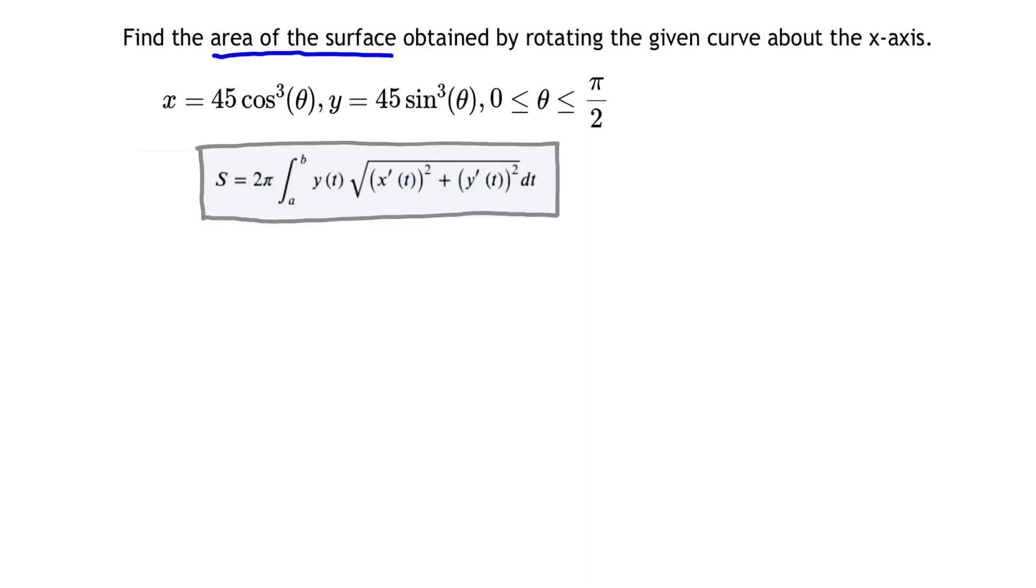Let me pull up a formula from OpenStax. Provided that y is not 0, if we rotate a parametric curve about the x-axis, the area of the resulting surface is given by surface area equals 2π times the integral from a to b of y(t) times the square root of (dx/dt)² plus (dy/dt)², all in the square root.